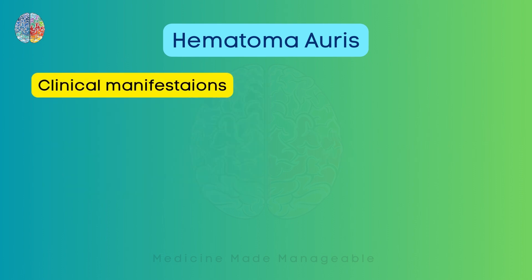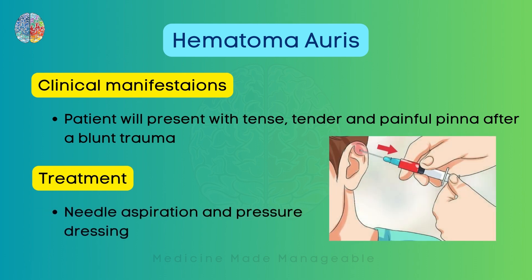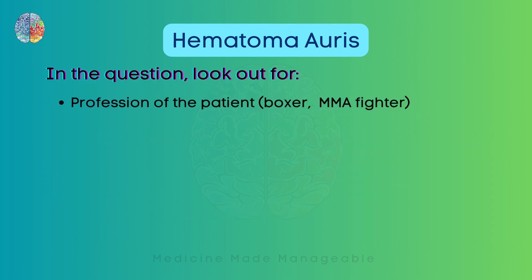The patient will present with a tense, tender, and painful pinna after a blunt injury. Treatment is needle aspiration to remove the collected blood, followed by pressure dressing. In exam questions, look out for the profession of the patient — he might be a boxer or a fighter — or any history of blunt trauma to the ear.